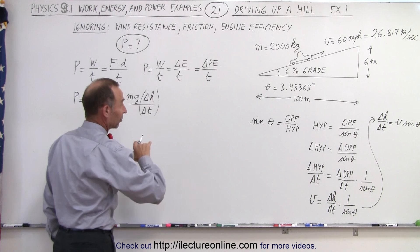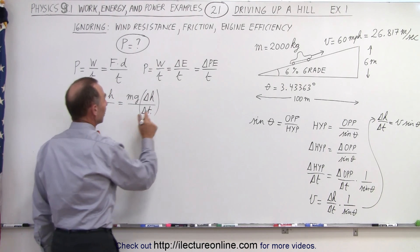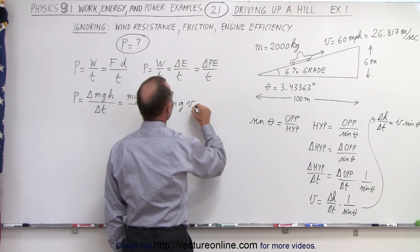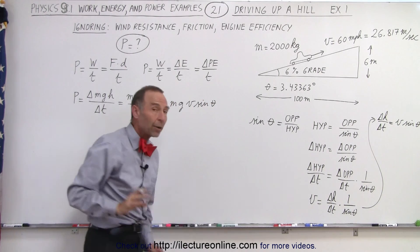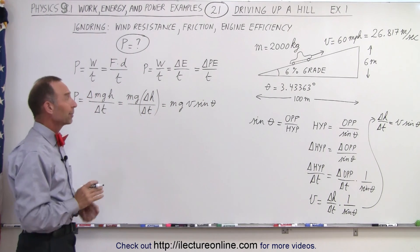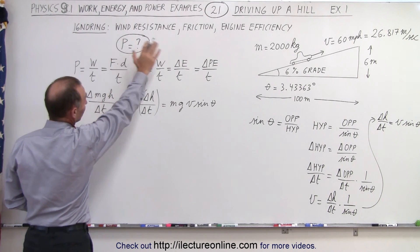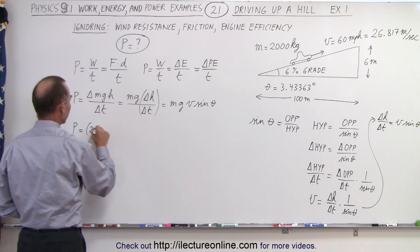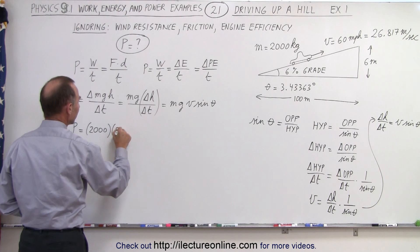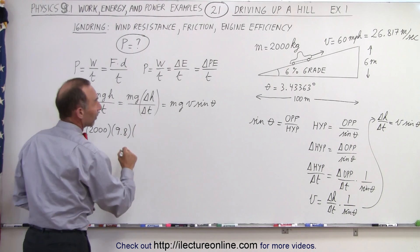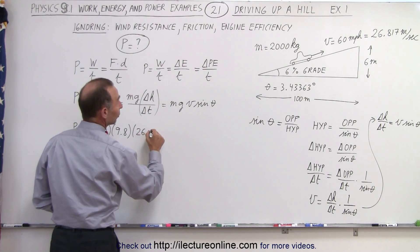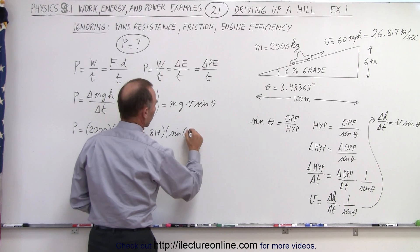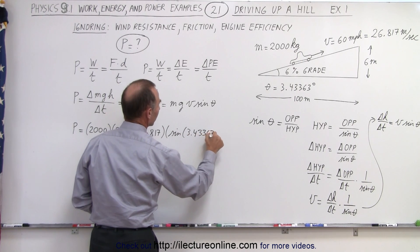Coming back to our power equation, the power required for the car to drive up the 6% grade at 60 miles per hour equals M times G times delta h over delta t, which is v times the sine of theta. So the power equals mass — 2,000 kilograms — times the acceleration due to gravity, 9.8, times the velocity, 26.817 meters per second, times the sine of 3.4333 degrees.